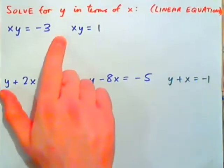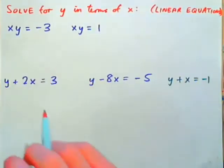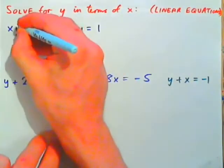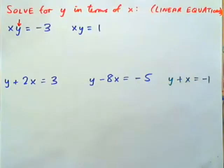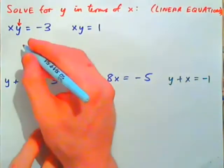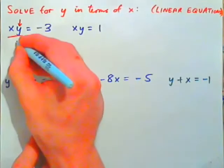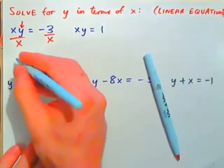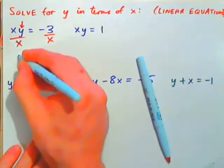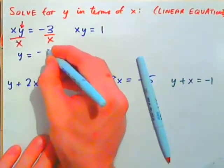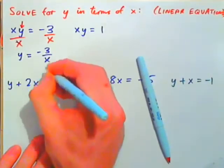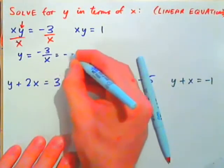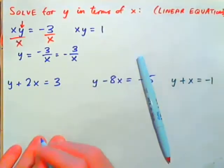Let's start with something like the first couple of problems. If we have X times Y equals negative 3 and we need to solve for Y, we need to get Y by itself. Y has been multiplied by X, so to undo multiplying by X, divide by X on both sides. The X's cancel and you get Y equals negative 3 over X, which can also be written with the negative in line with the fraction bar: negative 3 over X.